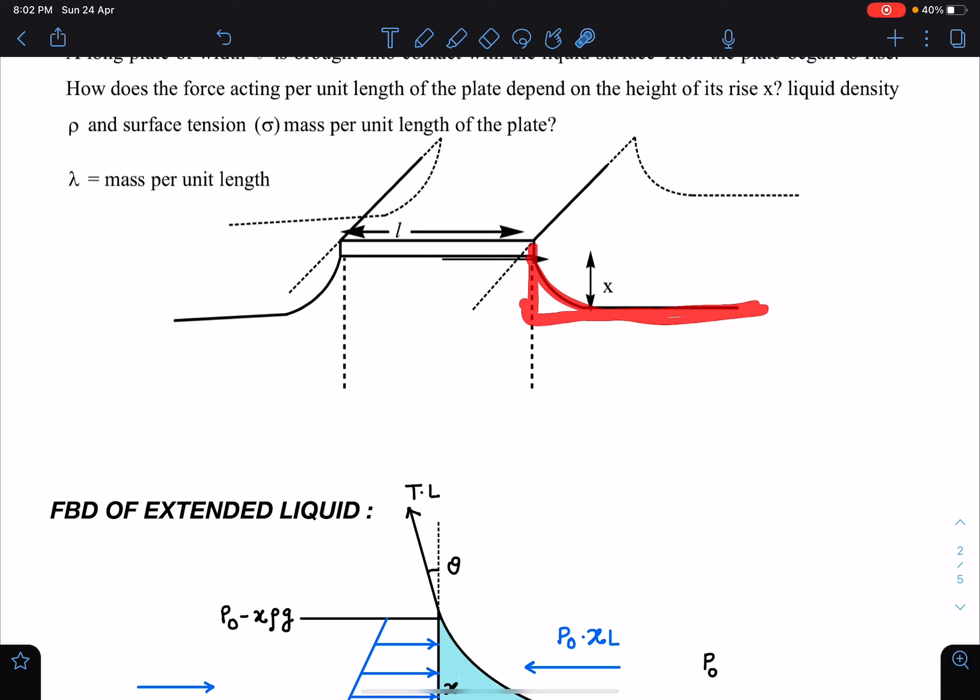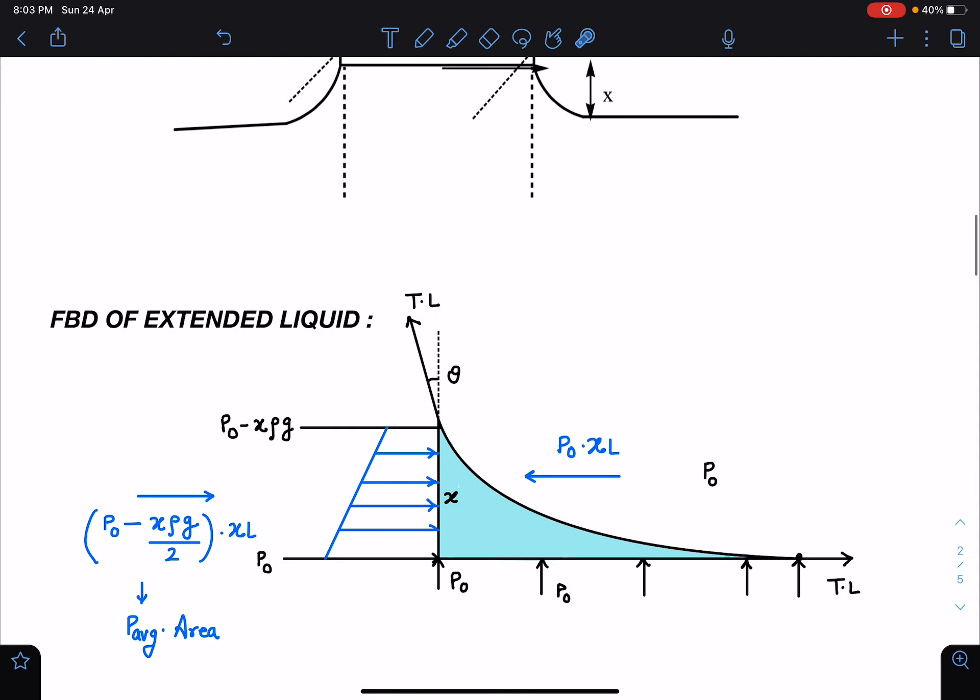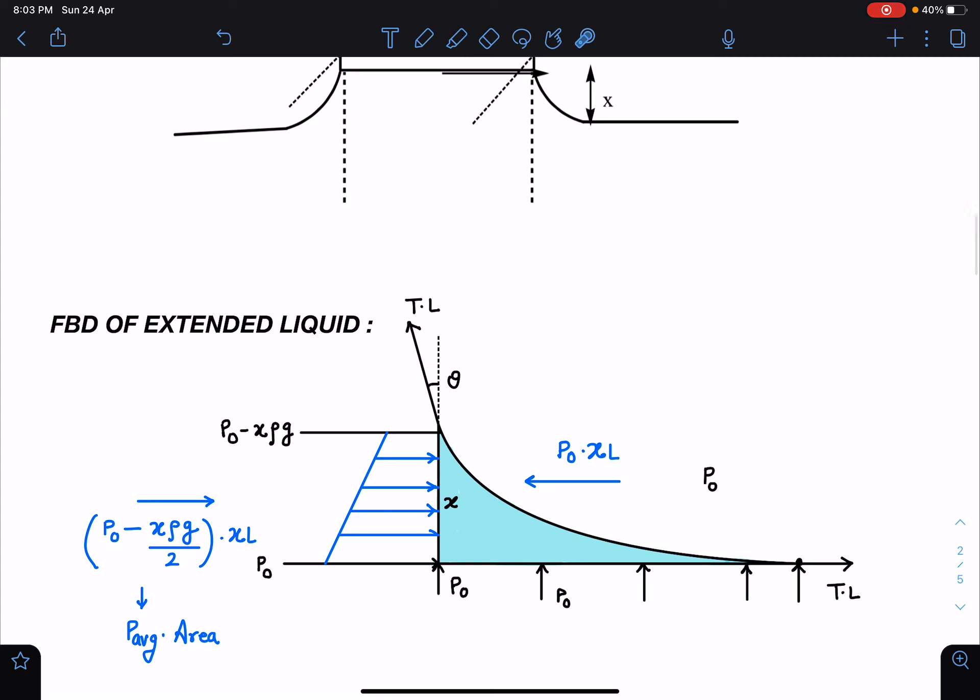Because it is in a balanced condition, so definitely force must be balanced on it. Far away from this plate point, liquid is horizontal and that is like a very famous aquarium problem situation. Here this remaining liquid which will be in this part, this liquid will attract it with the force of T into L.